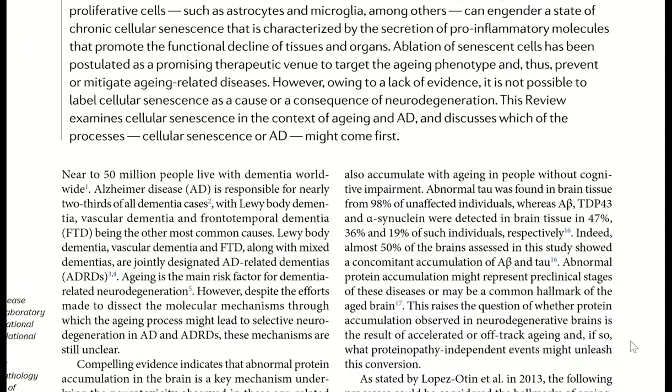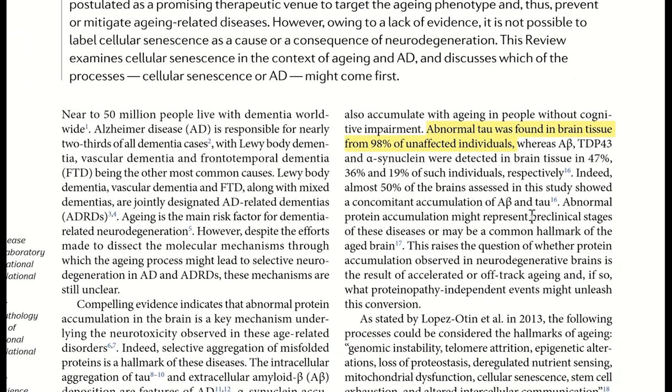This is heightened by the fact that you can see abnormal tau within the brain tissue of 98% of unaffected individuals. Likewise you can see the presence of amyloid beta in patients that also don't have the symptoms of Alzheimer's disease.